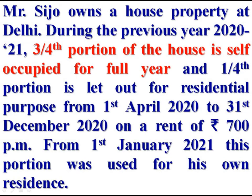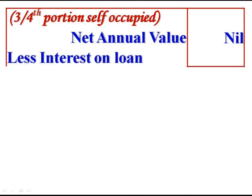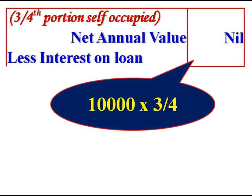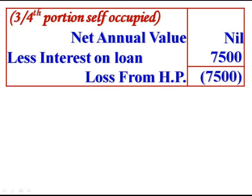Three-fourth portion of the house is self-occupied for the full year. We are computing income from house property of the three-fourth portion which was self-occupied for full year. The net annual value of a self-occupied house shall be taken as nil. As per law, there is one deduction: interest on loan. The total interest for the house is Rs 10,000, so interest for the three-fourth portion is Rs 10,000 × 3/4 = Rs 7,500. We get a loss from house property of Rs 7,500.